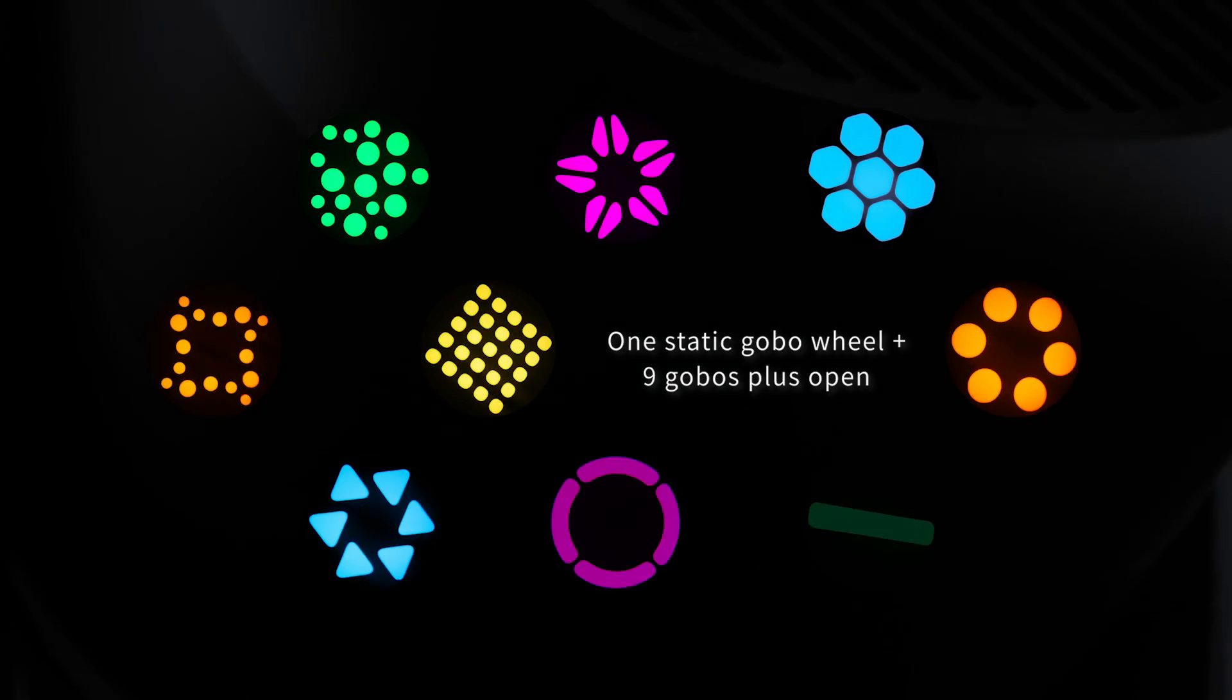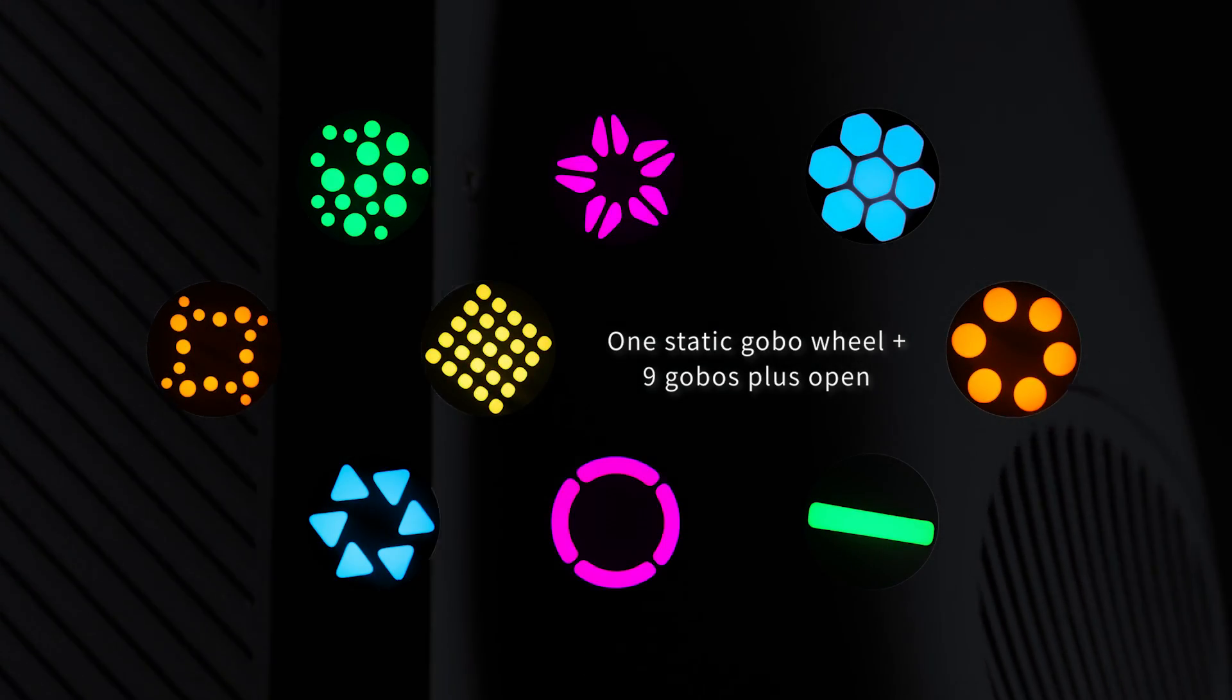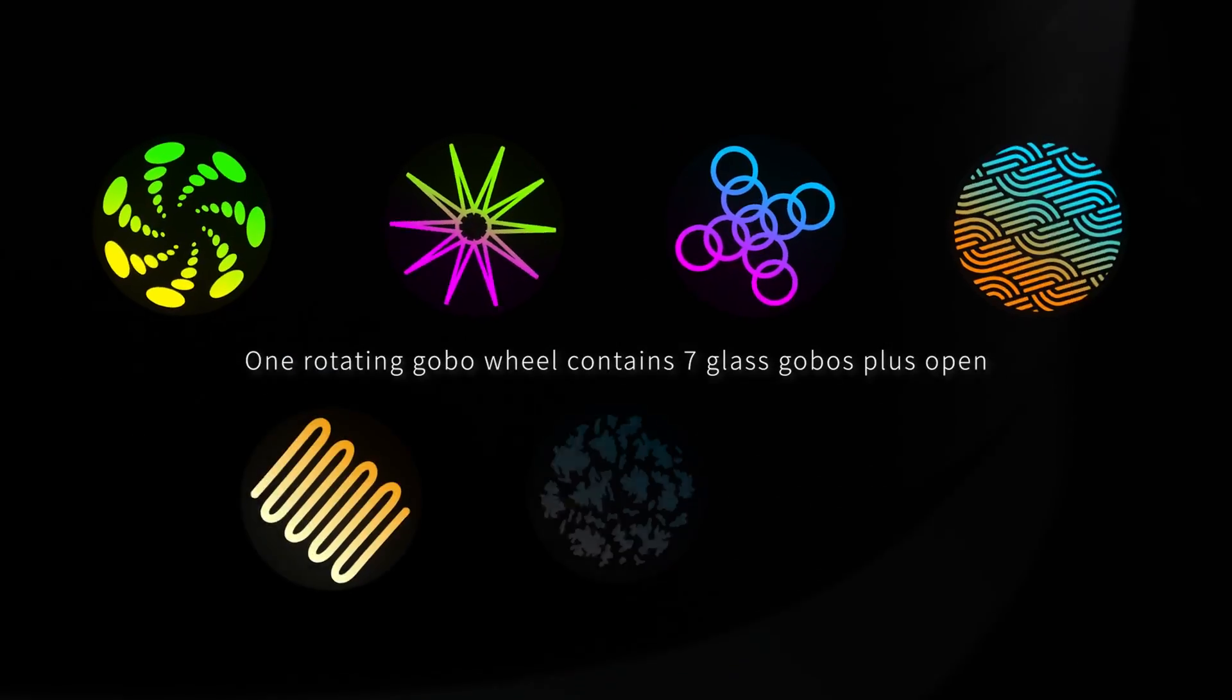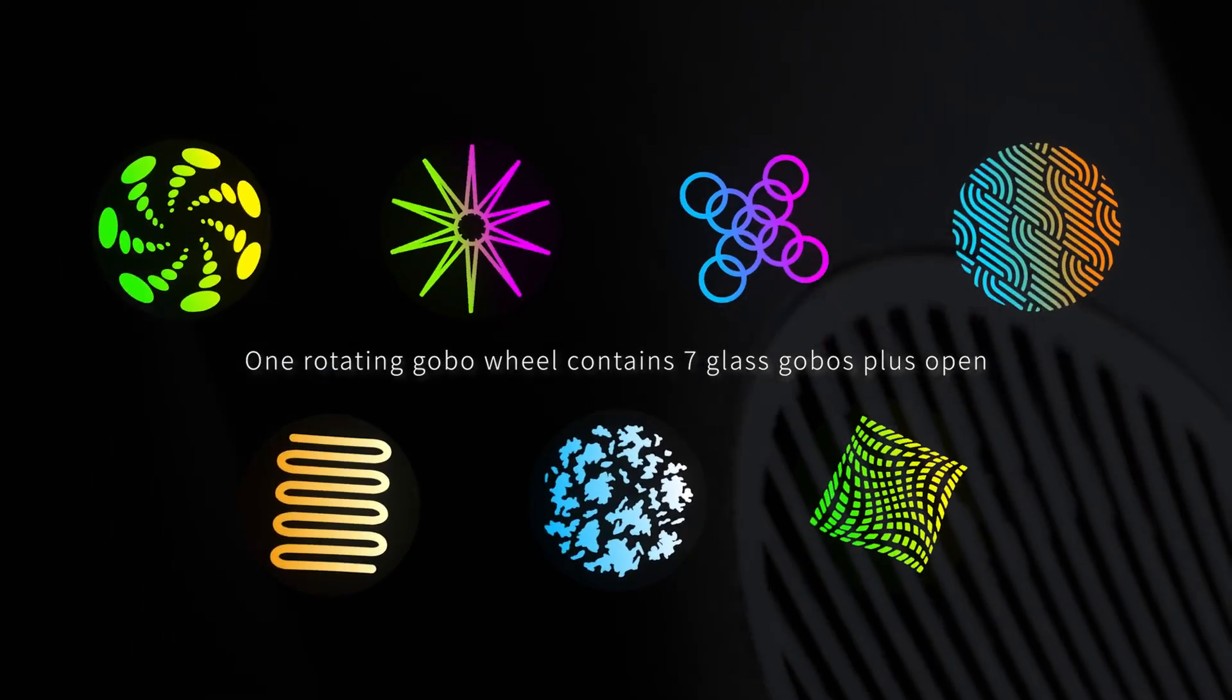One static gobo wheel includes 9 gobos plus open. One rotating gobo wheel contains 7 glass gobos plus open.